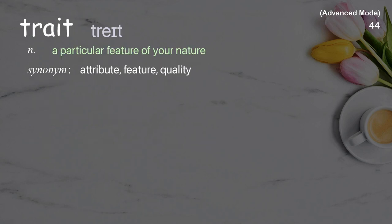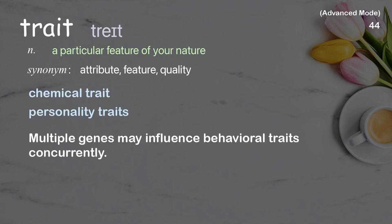Trait: A particular feature of your nature. Examples: Chemical trait. Personality traits. Multiple genes may influence behavioral traits concurrently.